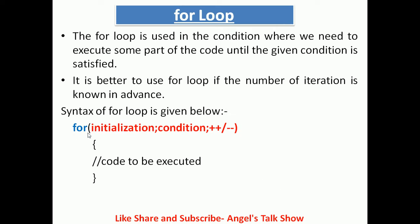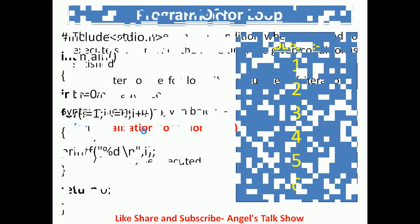'for' is the keyword of the loop. In the expression we write three main parts: the first is initialization, like i = 0 or i = 1; the second is the condition, like i <= 10 or j <= 5; and the third is the increment or decrement operator. Inside the body of the loop we write the code which will be executed when the condition is satisfied.